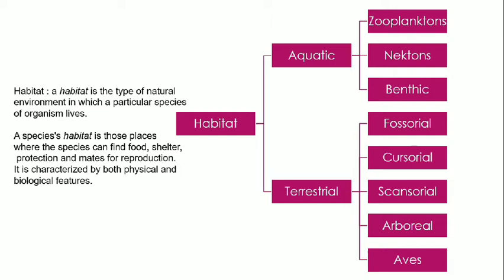Habitat depends on physical and biological factors. Physical factors include light, temperature, and concentration of water. Biological factors include the concentration or amount of flora and fauna present in that area. These are vital requirements for the survival of an organism. When talking about animal habitat, they are further classified into aquatic and terrestrial forms. Aquatic animals — those living inside water — are further classified into three types: zooplanktons, nectons, and benthic.